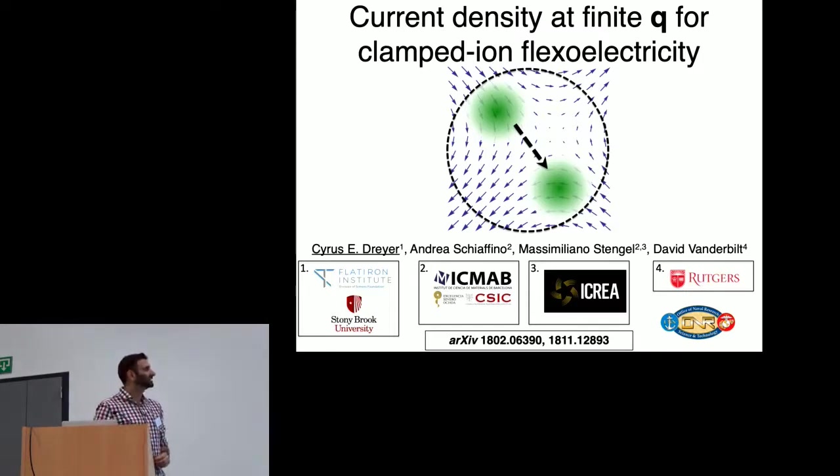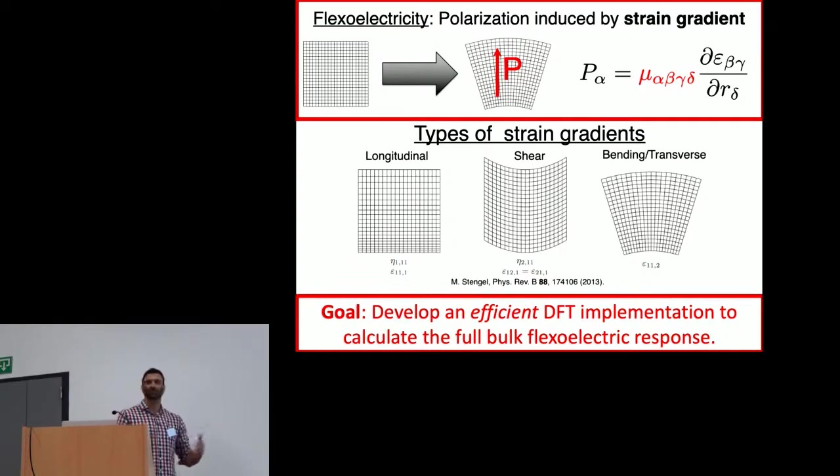So Max has done a lot of the work for me regarding the motivation for why we were working in this area. What we wanted to calculate are these flexoelectric coefficients, as Max already introduced. And the important thing in this case is that we have these variety of strain gradients and variety of responses, some of which are longitudinal, others like depicted here are transverse. Again, the polarization is in a different direction than the gradient.